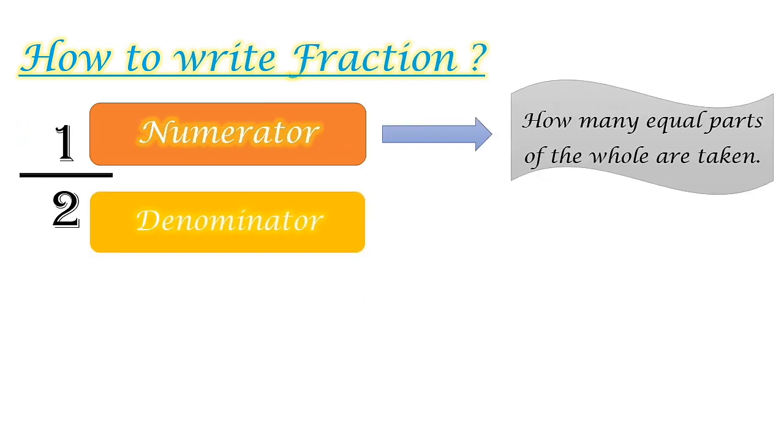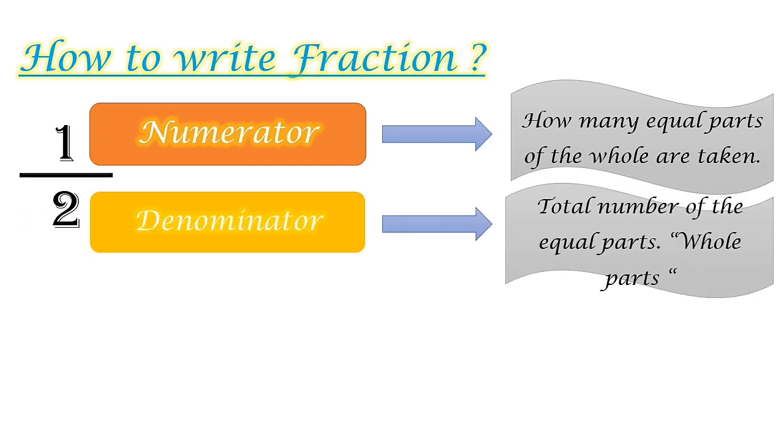Numerator is how many equal parts of the whole are taken or how many equal parts are we talking about. Denominator is the total number of the equal parts, the whole parts.